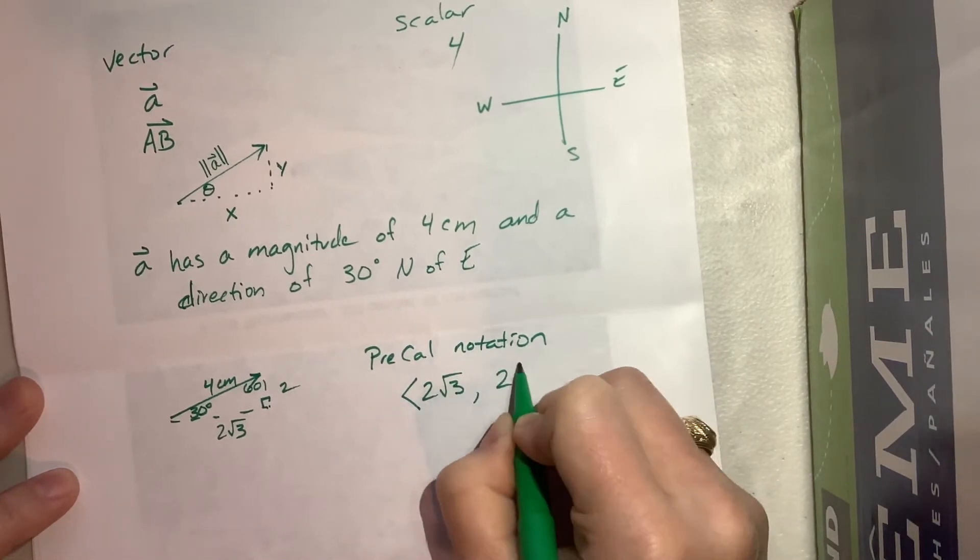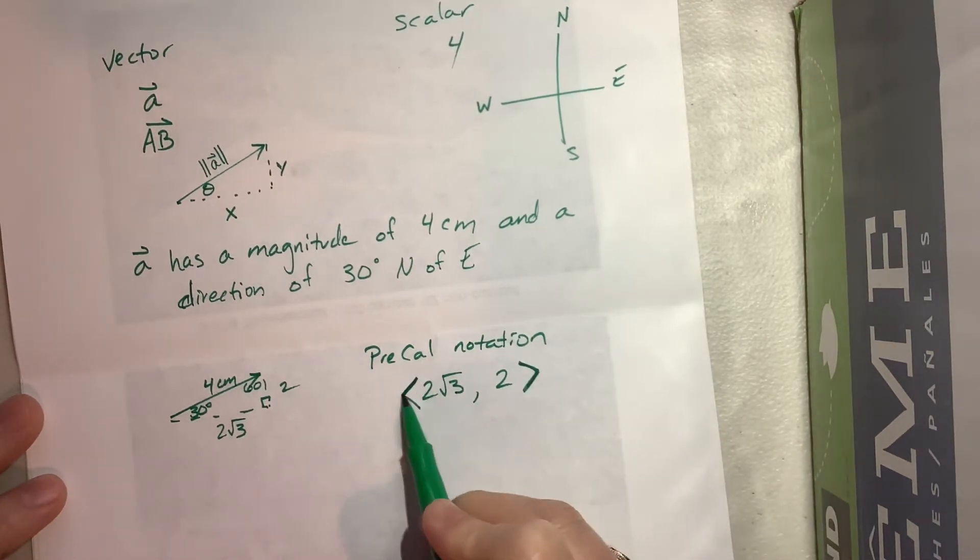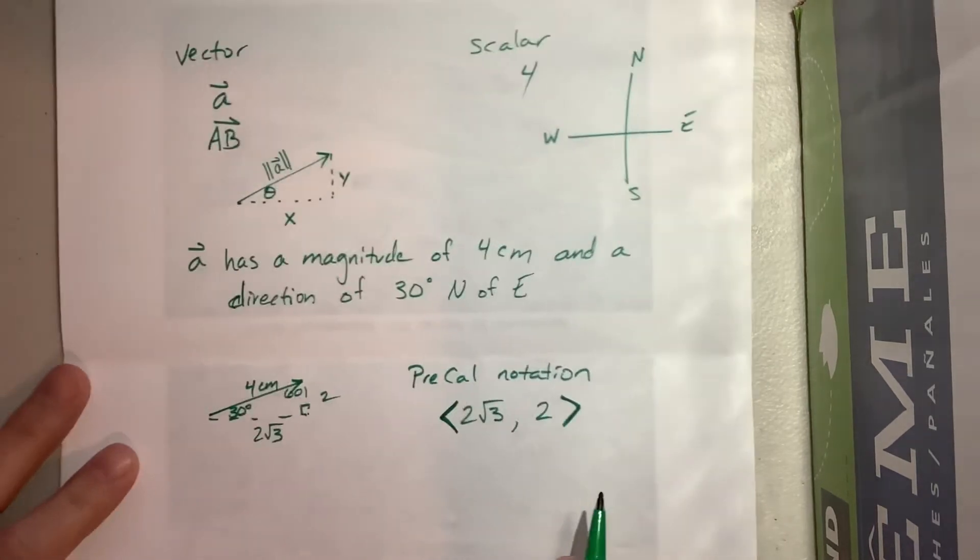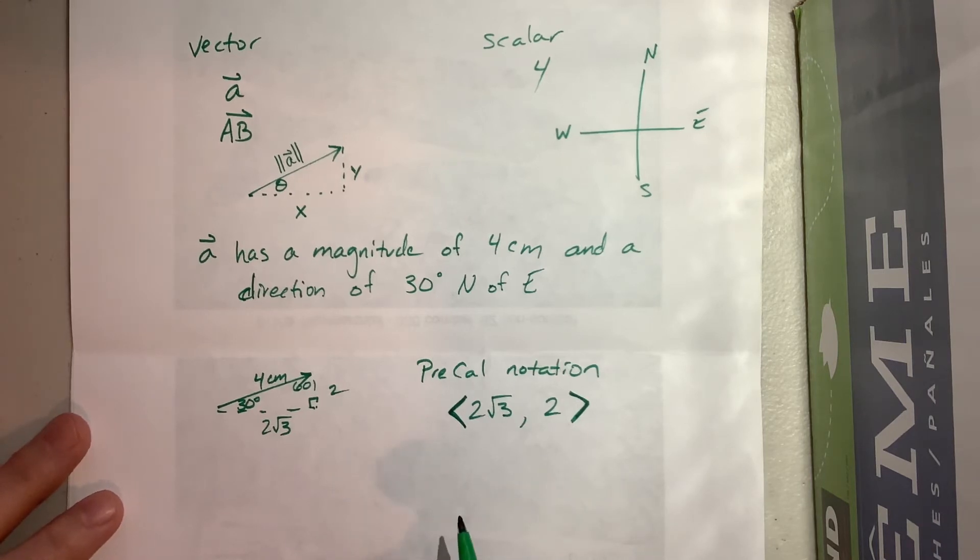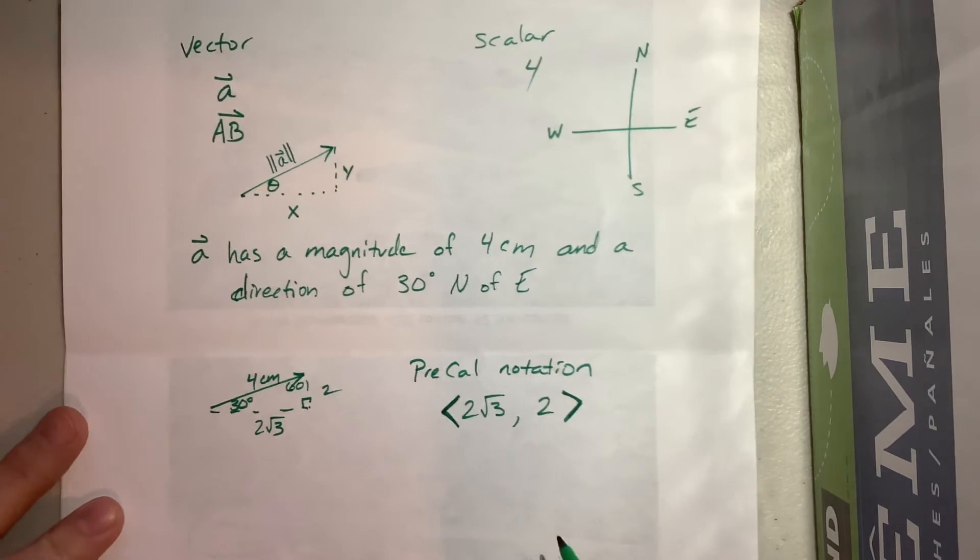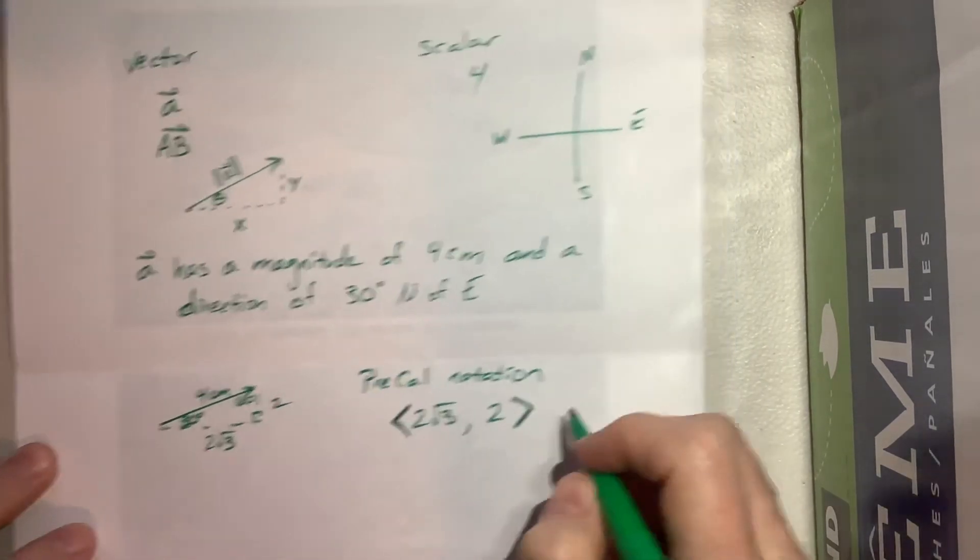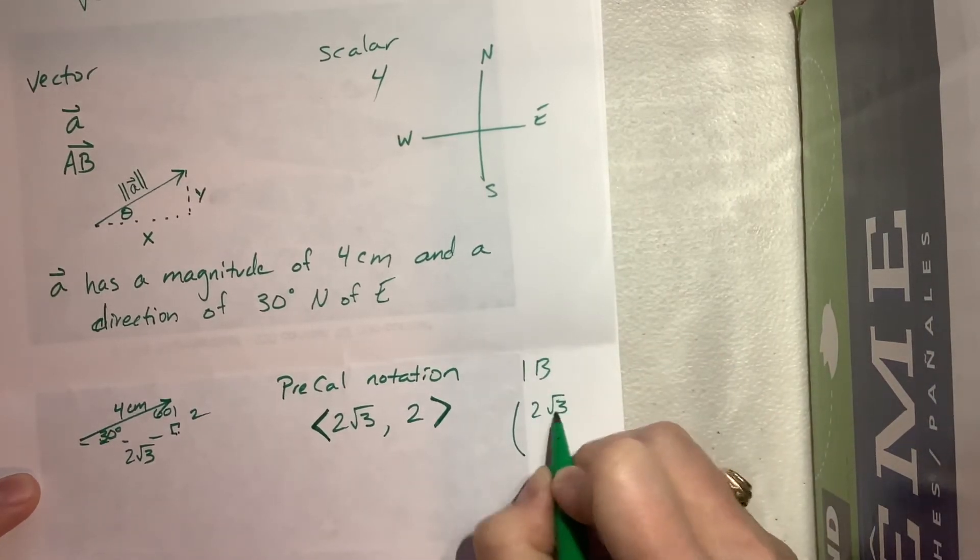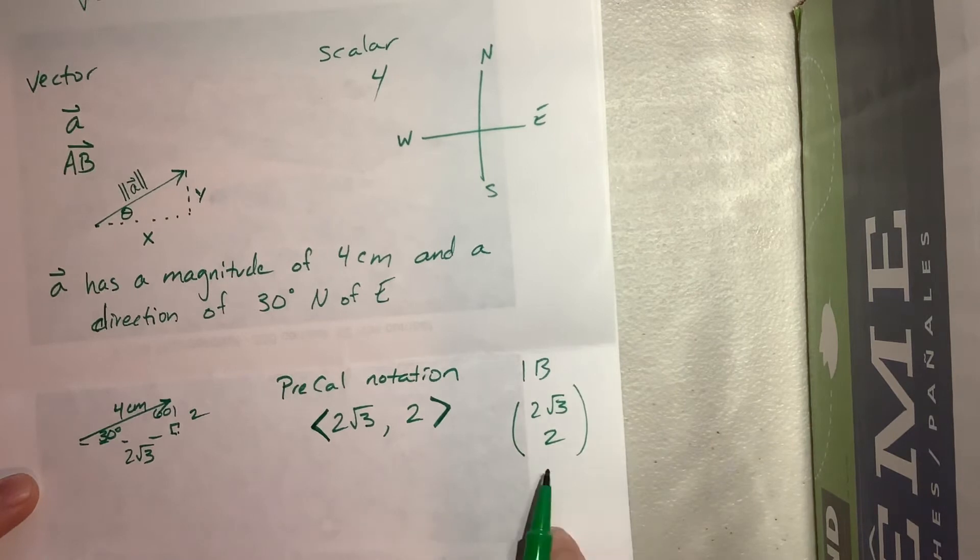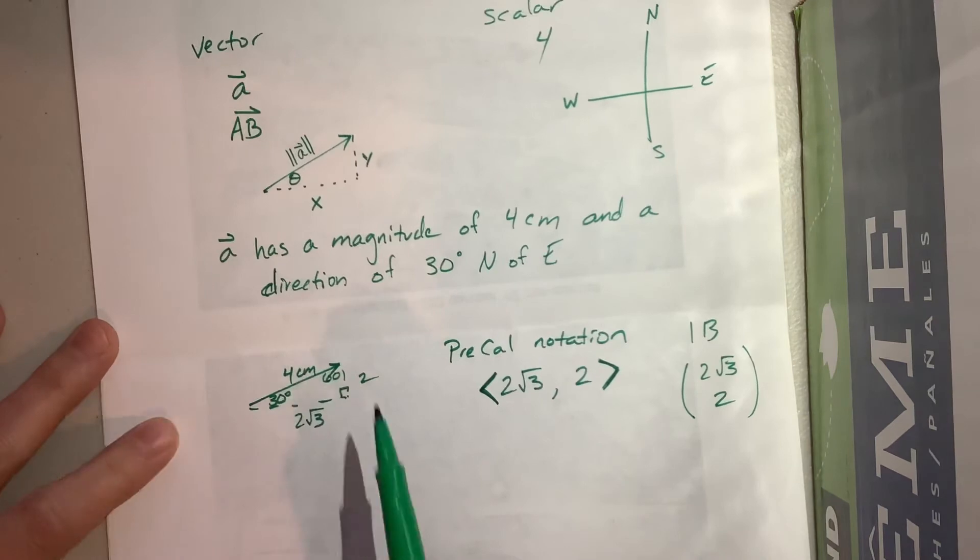So in pre-calc we write this, we'll do our x value first and so we'll write it this way and then we put a comma and then our y value. My kids in the past have referred to these as pointy C's because they kind of come to a point. The IB notation we would write the x value on top and then the y value underneath and the advantage to that is that it's easier to do operations with that.